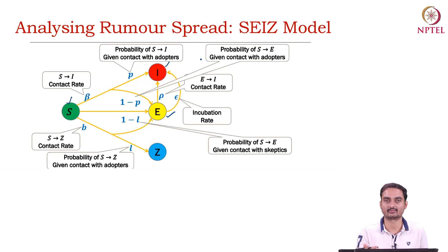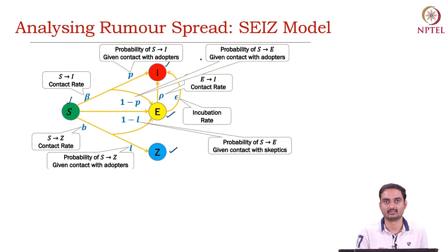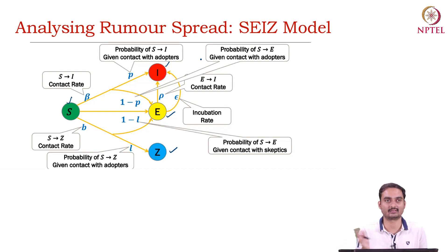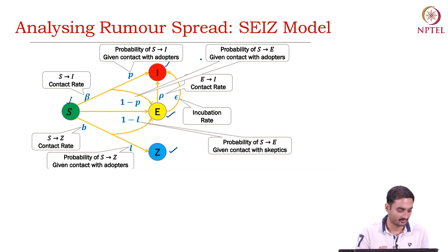Now some of those exposed users will be infected and will further spread the rumour, while some of them will not react. There is another state called skeptics, denoted Z. Skeptical users — those with this Z state — are the kind of users who essentially do not react to the rumour. They are essentially hard immune: even if there is social pressure, they would never react to any rumour or fake news.